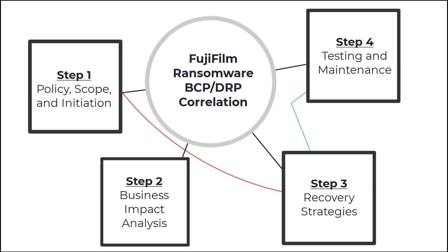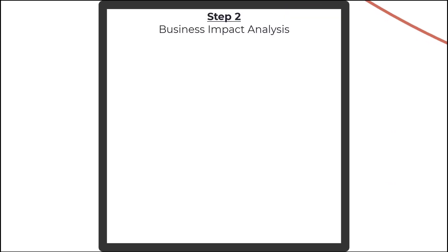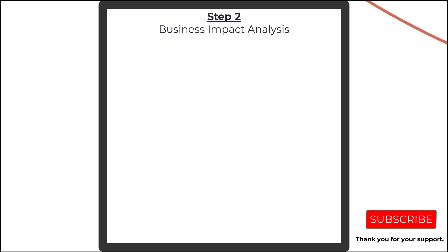Let's take a look at the most important step of any BCP/DRP plan — the Business Impact Analysis. I've said it multiple times in my videos: if you don't know about the Business Impact Analysis, you will fail the CISSP exam. So the BIA is important to know in general, not just for this video.